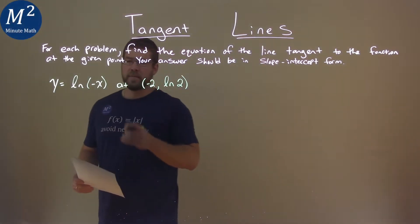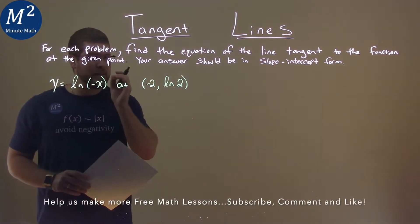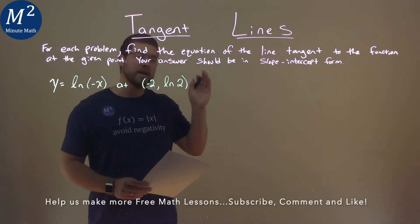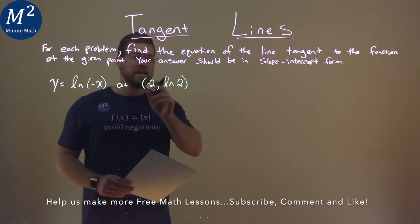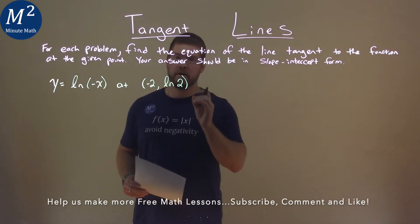We're given this problem right here, y equals the natural log of negative x, and we need to find the equation of the line tangent to this function at negative 2 comma natural log of 2.